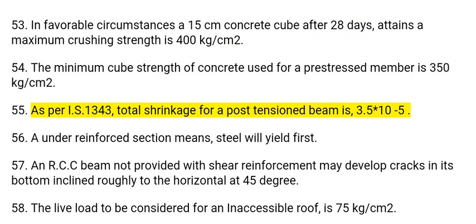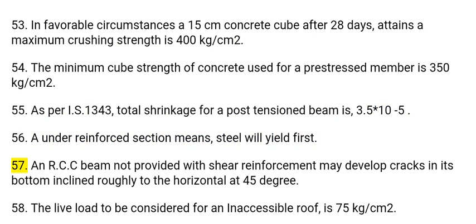55. As per IS-1343, total shrinkage for a post-tensioned beam is 3.5 × 10⁻⁵. 56. An under-reinforced section means steel will yield first.